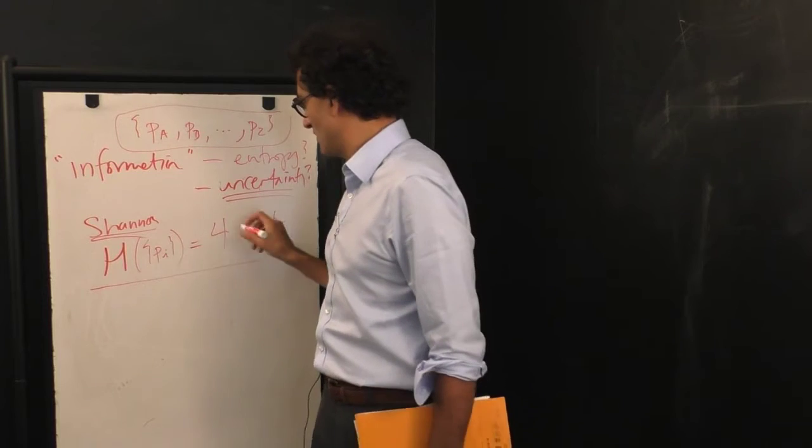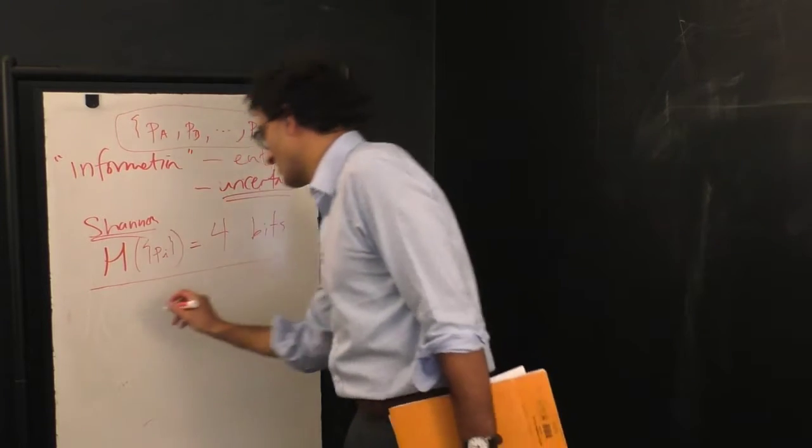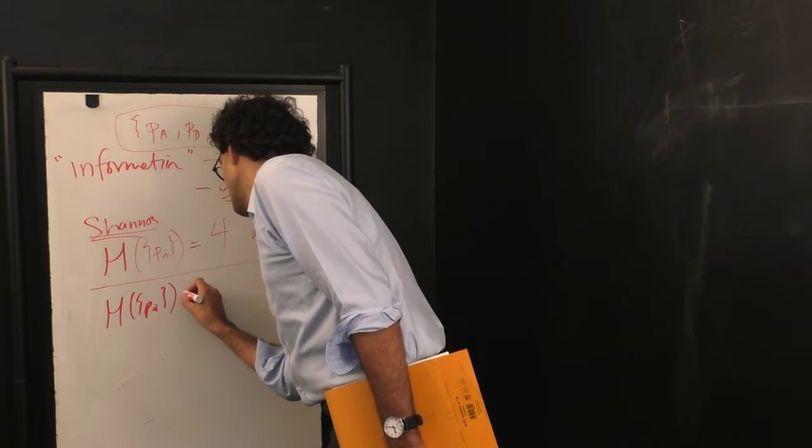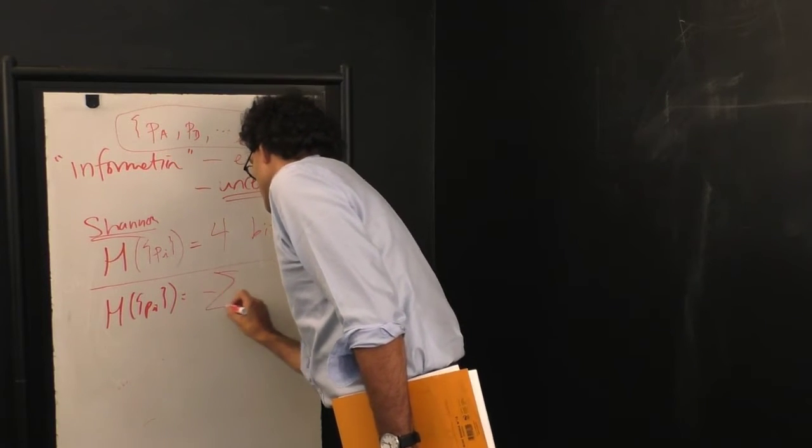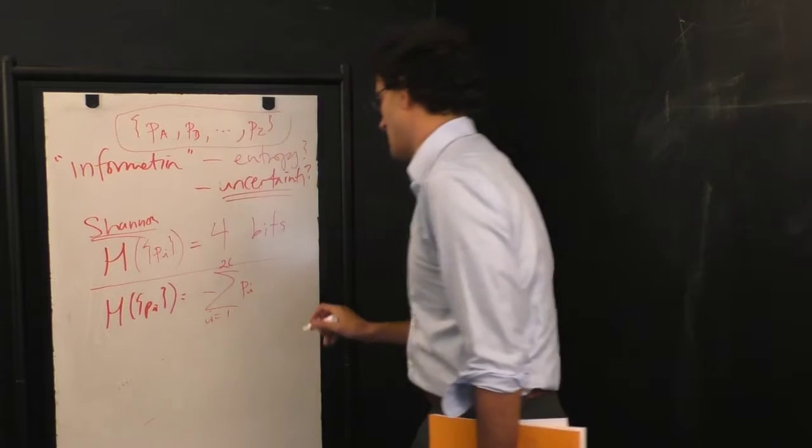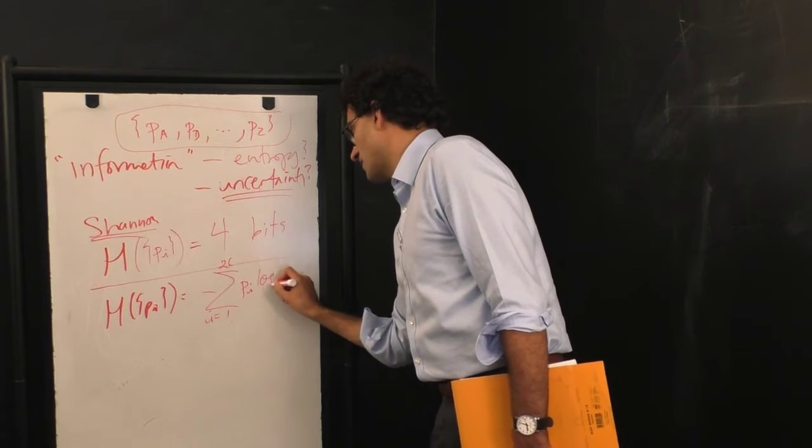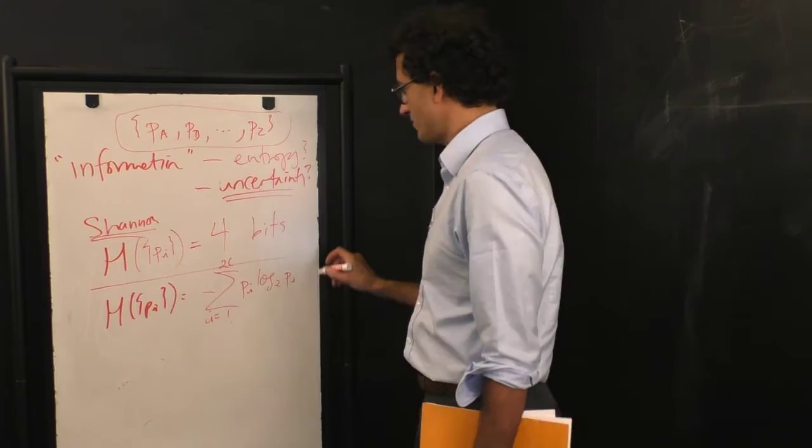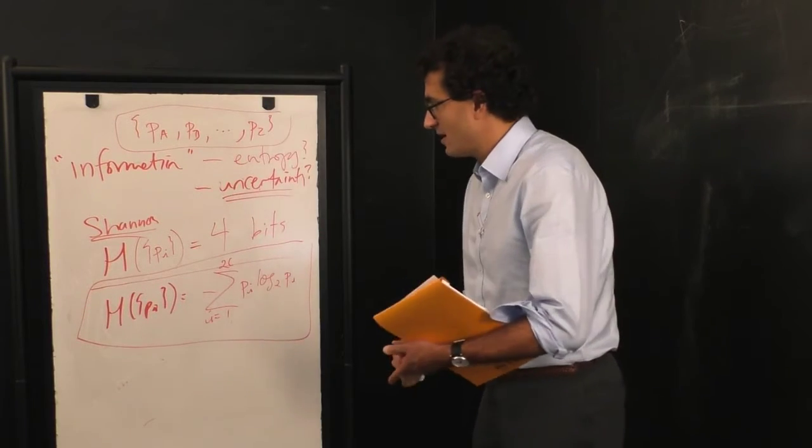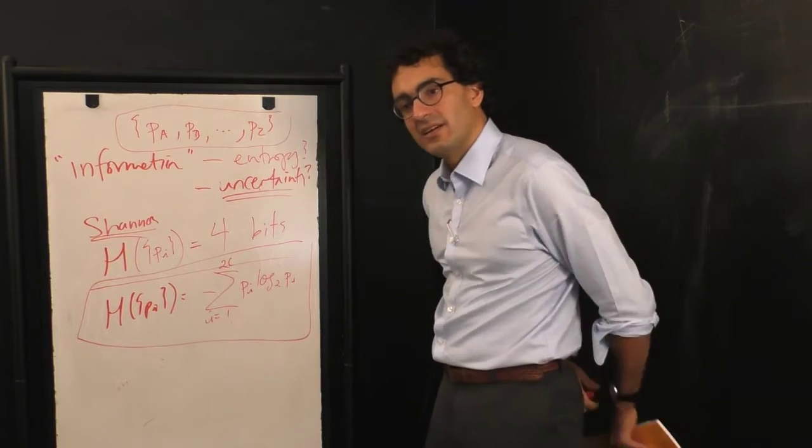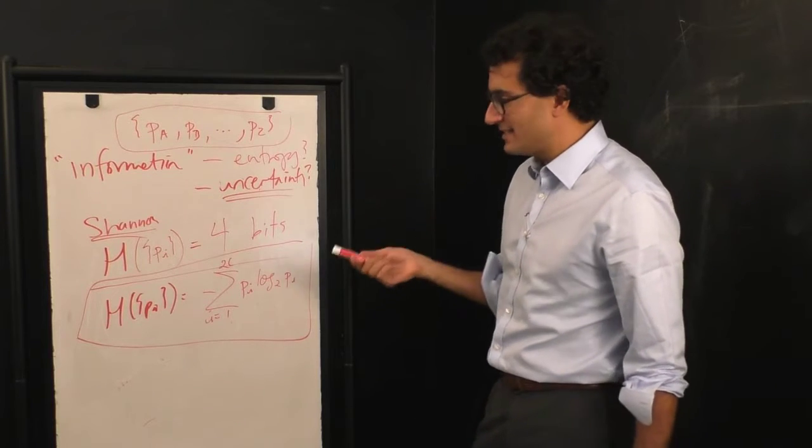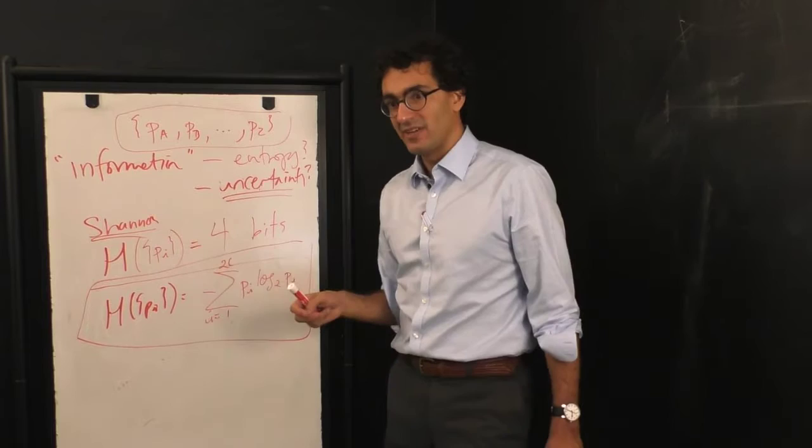Okay, and so how do we take a particular set of probabilities and map them to a number? Well, H of Pi is defined, in general, as the negative of the sum over all the options, in this case 26 options, of Pi times the log base 2 of Pi. This is the fundamental quantity of information theory, and one of the questions you might have is how did Shannon derive it? In fact, what he did was he came up with a series of axioms that he wanted this function to satisfy.